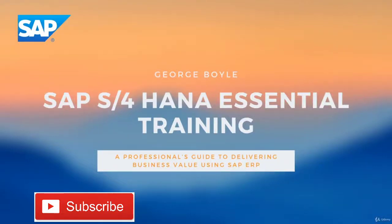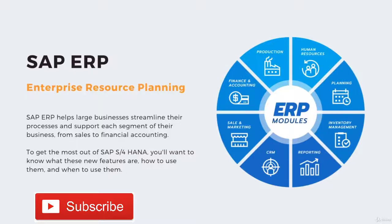The SAP ERP, or Enterprise Resource Planning Platform, helps large businesses streamline their processes and support each segment of their business, from sales to financial accounting. S4HANA is the latest SAP business suite that's been around since 2015. It continues to evolve, getting more and more powerful, while remaining stable and flexible to use.